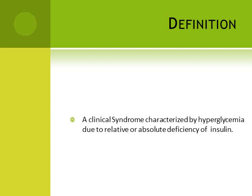Insulin deficiency may be absolute — that is a feature of type 1 — where there is no insulin in the body and the insulin-producing cells are destroyed. The other cause of hyperglycemia is relative insulin deficiency, meaning insulin is present but it is not working properly — that is called insulin resistance. You must remember this comprehensive definition: it is a clinical syndrome characterized by hyperglycemia due to relative or absolute deficiency of insulin.